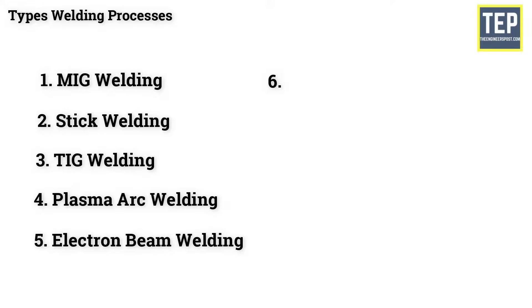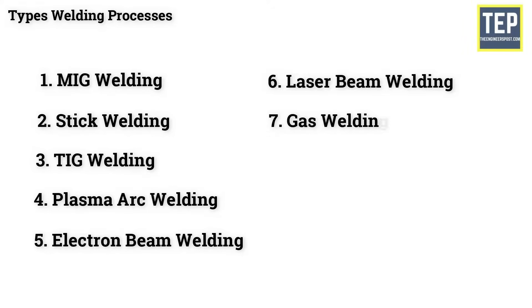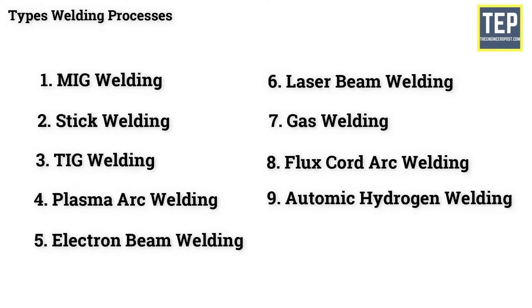The types of welding processes include: 1. MIG welding, 2. Stick welding, 3. TIG welding, 4. Plasma arc welding, 5. Electron beam welding, 6. Laser beam welding, 7. Gas welding, 8. Flux cord arc welding, 9. Atomic hydrogen welding, 10. Electroslag welding.